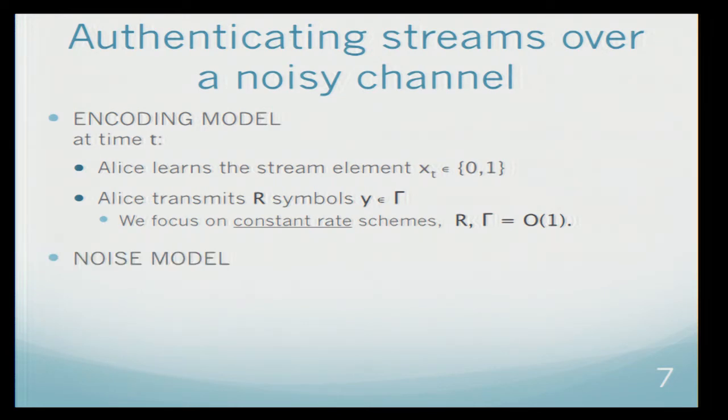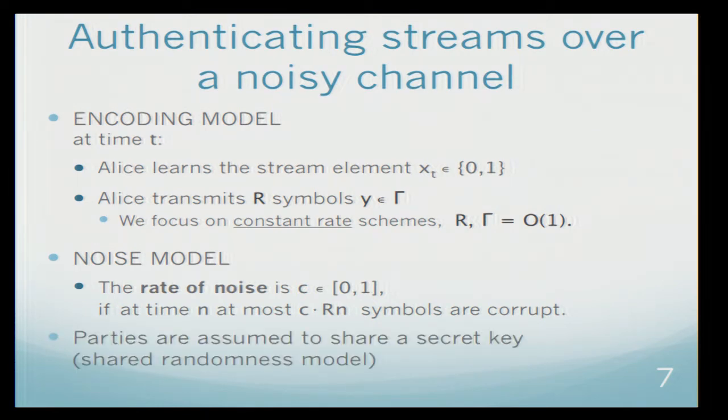Our noise model: we will say that the rate of noise is c, which is some constant between 0 and 1. If up to time n, for any time n, the fraction of symbols that were corrupted is at most c. And also we assume that the parties share some secret key. This will be used for the authentication.